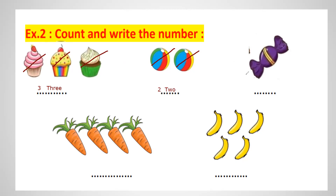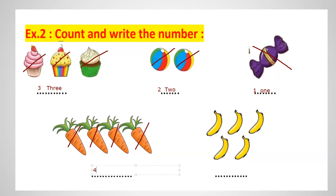What about the number of candy? Yes, it's only 1 candy, so we put number 1. It's O-N-E. What about the number of carrots? 1, 2, 3, and 4 — so we have 4 carrots. Put number 4 and write F-O-U-R. Now can you count the bananas? 1, 2, 3, 4, and 5. So here we have 5 — F-I-V-E.